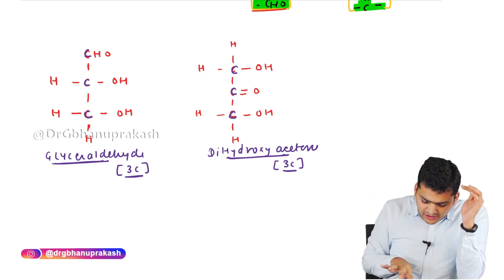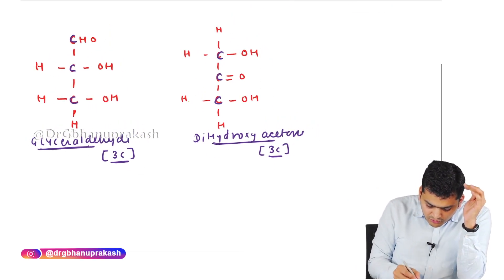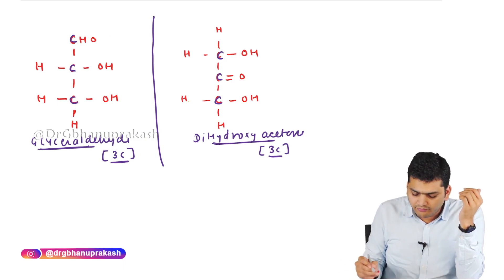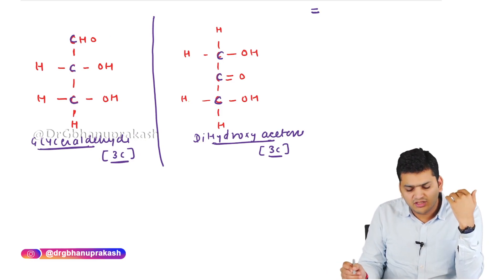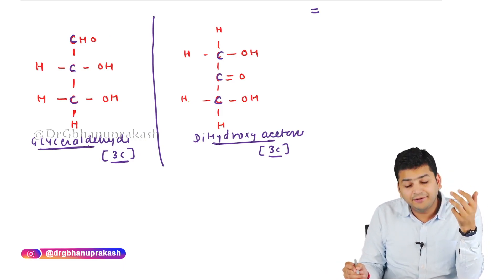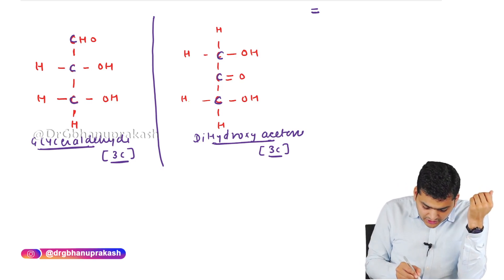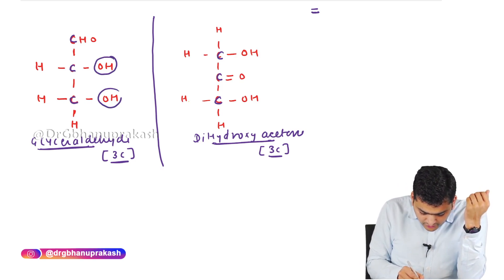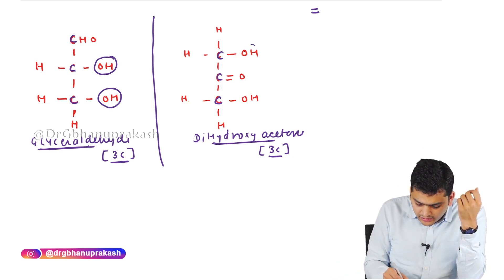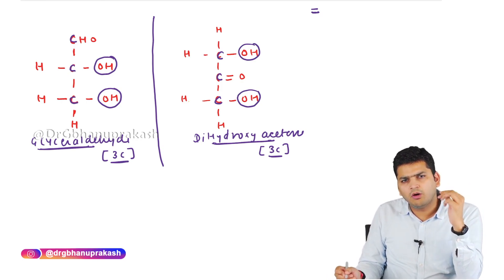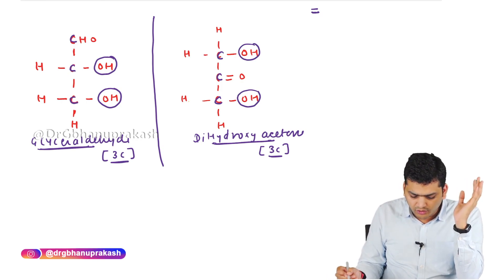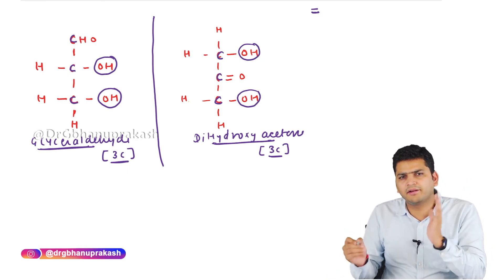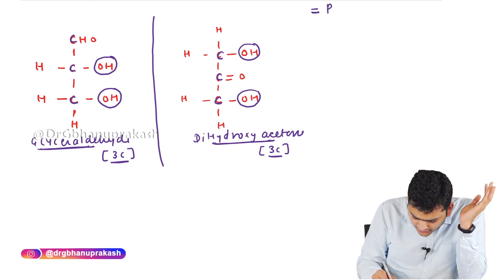Now that we have the smallest possible carbohydrates using either the aldehyde or keto group, let's derive the definition of carbohydrate from these molecules. In each molecule, if I count the hydroxyl groups — glyceraldehyde has two hydroxyl groups, dihydroxyacetone also has two. So there must be more than one hydroxyl group. Therefore, carbohydrate is a polyhydric derivative.